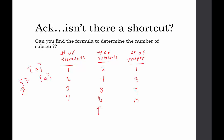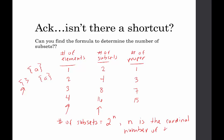Look at this — it's a doubling pattern. How do we get from one to two, two to four, three to eight, four to 16? These are the powers of two. So we can say the number of subsets is given by two to the n, where n is the cardinal number of the set — that is, the number of elements in the set. Two to the n tells us the number of subsets.